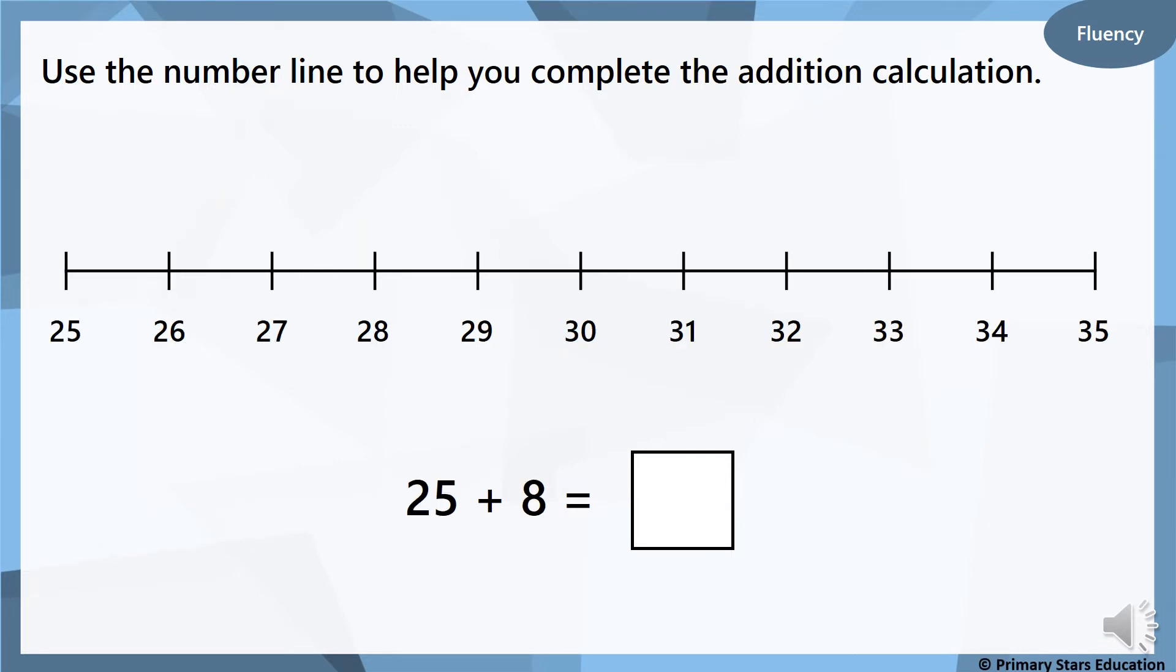Right, let's have a go at another one. This time we've got 25 add 8. So our number line starts at 25. And we're going to go along again. So 1, 2, 3, 4, 5, 6, 7, 8. So the answer we've landed on is 33. So that's how we can do it by jumping in 1.